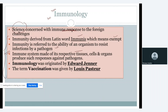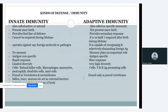Depending on how a person resists infection by a pathogen — some people catch a cold with every weather change, while others rarely become ill. Those who can resist infection have stronger immunity. The immune system is made up of tissues, cells, and organs that produce responses against pathogens. Immunology was originated by Edward Jenner, and the term vaccination was given by Louis Pasteur.